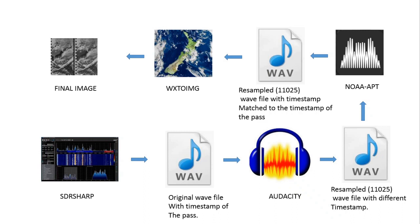WX2IMG software requires an audio file with the same timestamp as that of the pass to correctly build overlay maps, and so we need to copy the timestamp from the original wave file and write it to the resampled wave file with sampling rate of 11025 which we created using Audacity. This will be done in the NOAA-APT application.